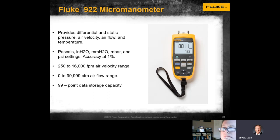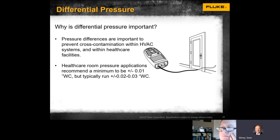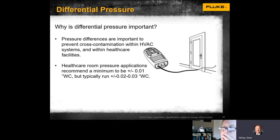The next item is the Fluke 922 manometer. This is crucial because it allows you to perform differential and static pressure tests, air velocity, airflow, and temperature measurements. The differential pressure capability is especially important in systems where you need positive pressure on one part of a room and negative pressure on another — critical in healthcare, operating rooms, labs, and pharmaceuticals where you want to keep positive pressure inside so that when a door opens, nothing comes back into that environment.